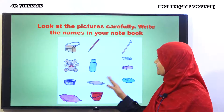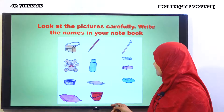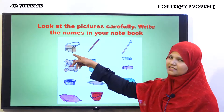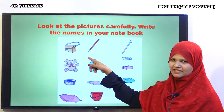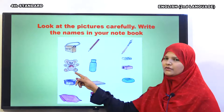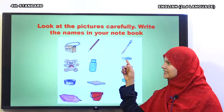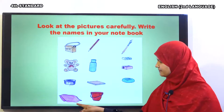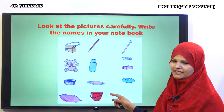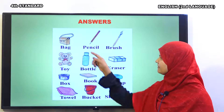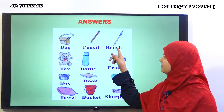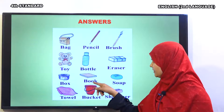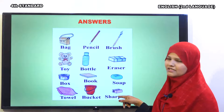Here are some pictures. We have to write the names of these pictures. Dear children, write these names in your textbook and also in your notebook. What is this? Good, this is a bag. Next, pencil. Another one, brush. Toy. Bottle. Eraser. Sharpener. Box. Book. Soap. Towel and bucket. The answers are: bag, pencil, brush, toy, bottle, eraser, box, book, soap, towel, bucket and sharpener.